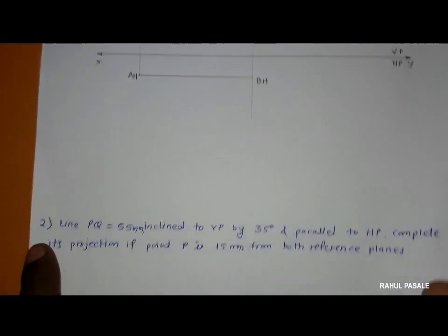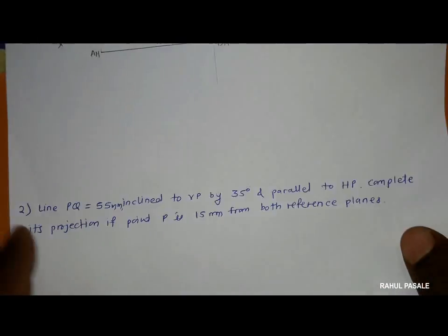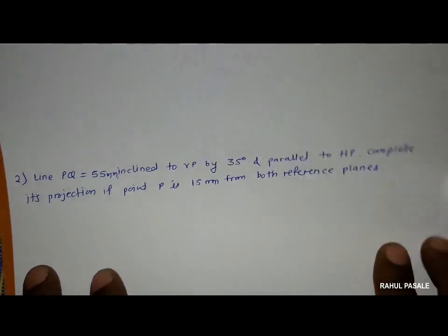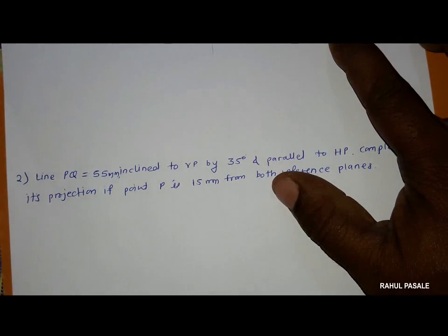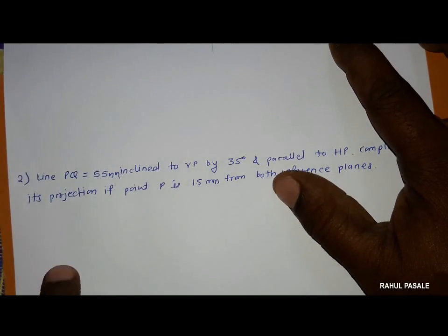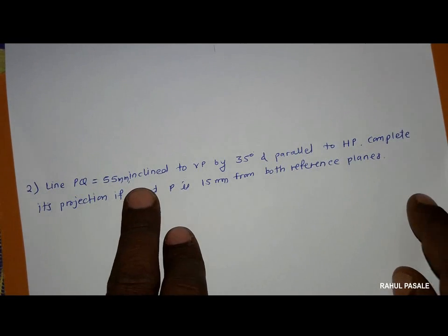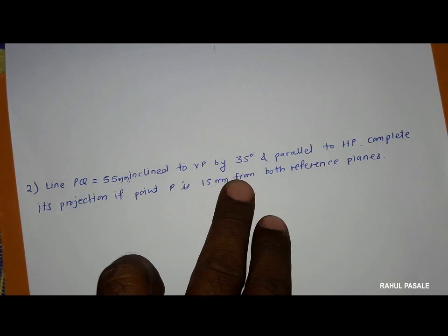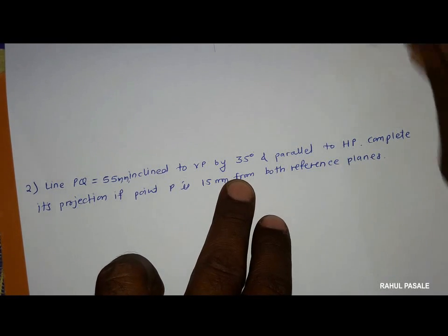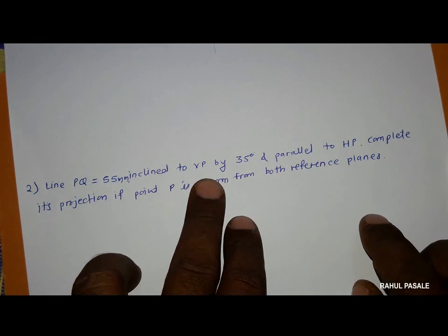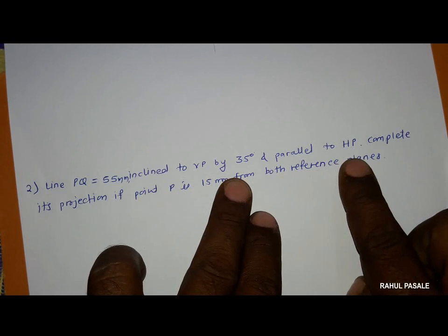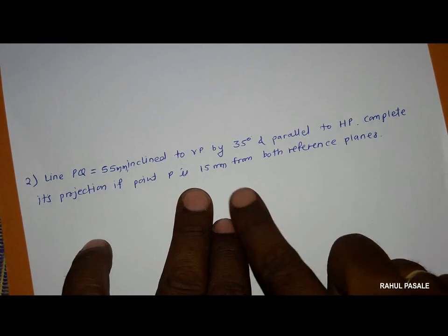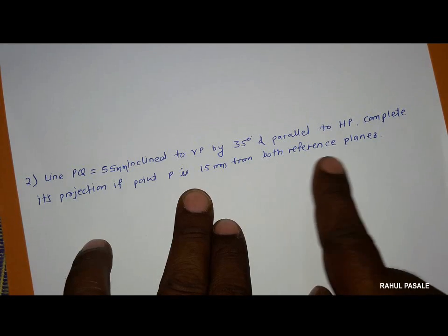Now we will see the second problem. In this problem, line PQ is equal to 55 mm in length, inclined to VP by 35 degrees, and parallel to HP. Complete its projection if point P is 15 mm from both the reference planes.